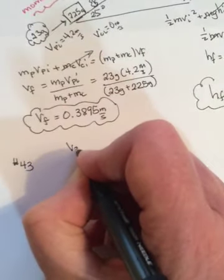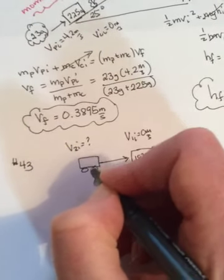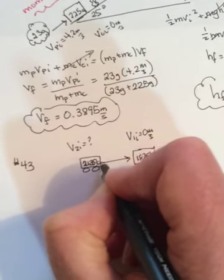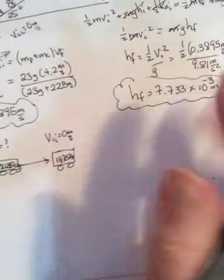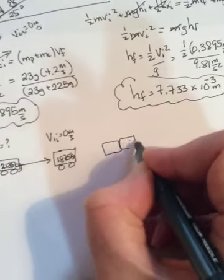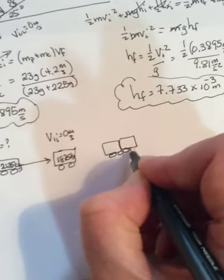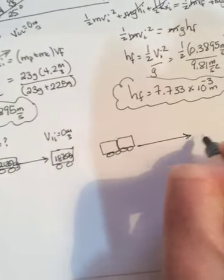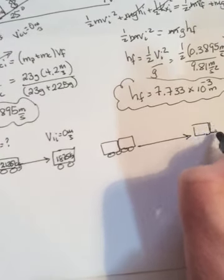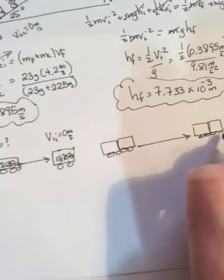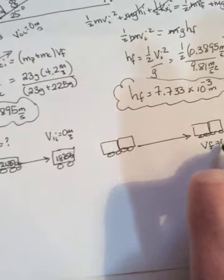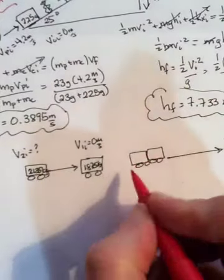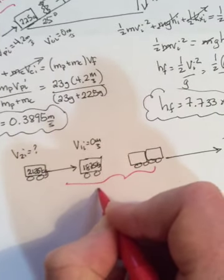And we're looking for v2 initial, and his mass is 2135 kilograms. Okay, and after they collide, they stick together. And in these conservation of energy momentum questions, after the collision they always have to stick together. They stick together and they slide along the road until eventually vf is zero.